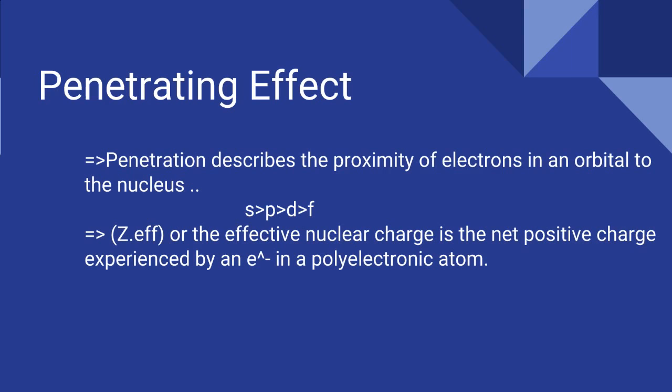In short, penetration is basically how well the electron feels the nucleus. The core electrons have more penetration than the outer electrons since they feel the strongest pull. The penetration order is in descending order: S is greater than P, which is greater than D, which is greater than F.